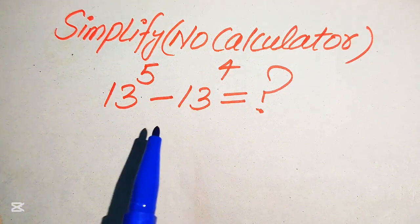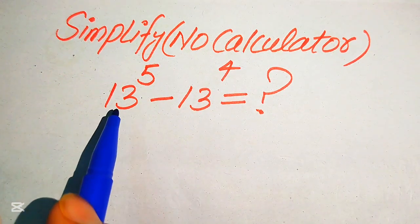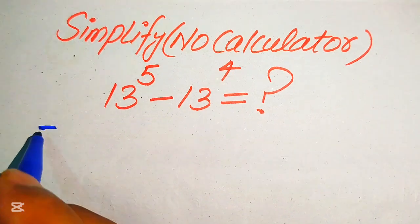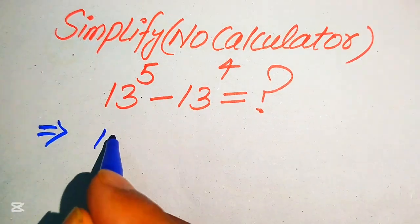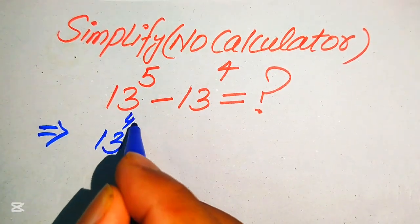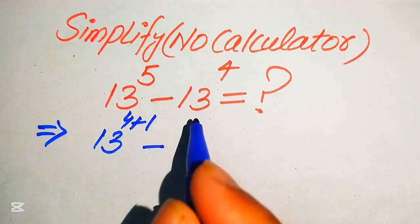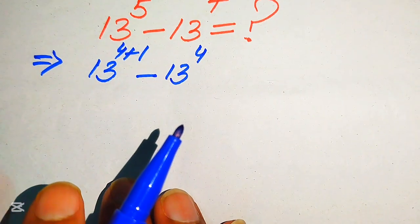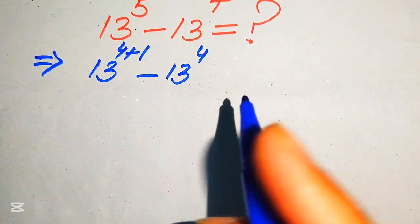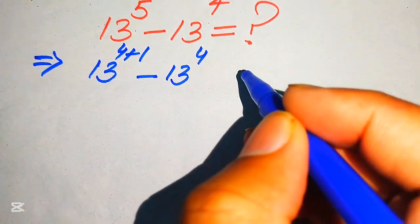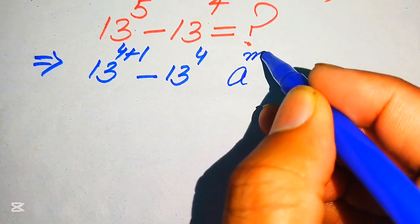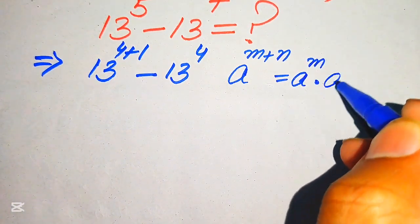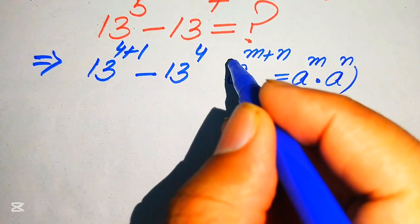The very first step is to focus on the exponent of the first term. The exponent of the first term is 5, so we break this 5 as 4 plus 1, and minus 13 to the power of 4. After that we need to use the exponent law: a to the power of m plus n equals a to the power of m multiplied by a to the power of n.